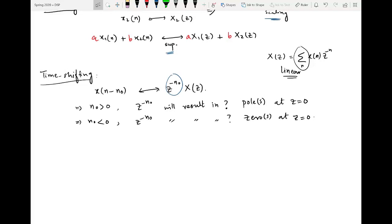When we delay the time domain sequence, the corresponding frequency domain sequence will be multiplied by this particular term, which means there will be poles and zeros at Z equals zero.